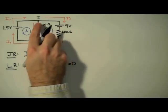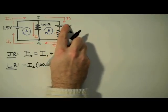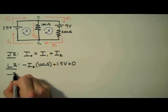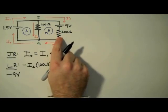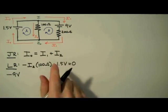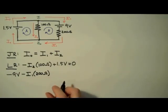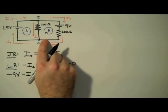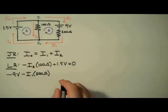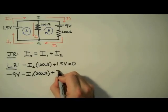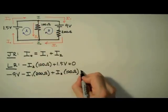Next we use the loop rule to analyze loop B. Starting again in the upper left-hand corner, we travel clockwise to the first component — a 9-volt battery traveling from high to low, giving a voltage drop of minus 9 volts. Continuing around loop B, we get to the 200 ohm resistor. We're traveling clockwise, which is with the direction of I1, indicating a voltage drop, so I write minus I1 times 200 ohms. Then we continue up the middle leg to the 100 ohm resistor. Here we're traveling up the leg whereas the current travels down, indicating a voltage lift, so I write plus I2 times 100 ohms. Complete loop B and set this equal to 0.